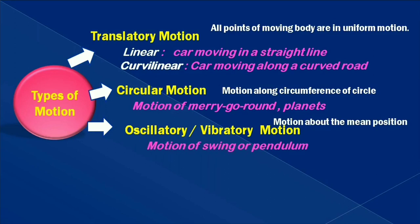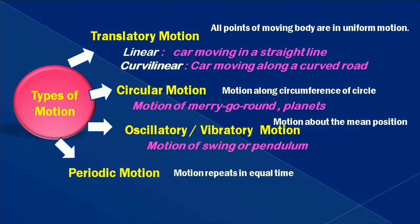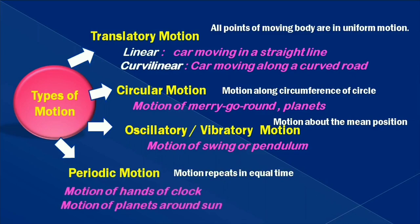Periodic motion: the word 'period' itself suggests repetition of motion. When motion repeats in equal intervals of time, that type of motion is called periodic motion. Basic examples we observe on a day-to-day basis are the motion of the hands of a clock, or the motion of planets around the sun.